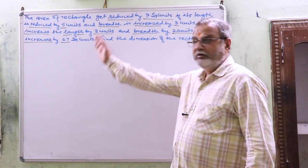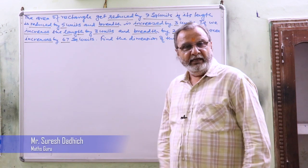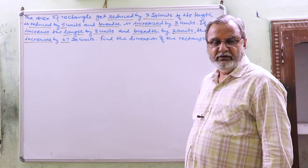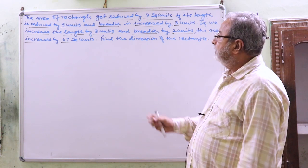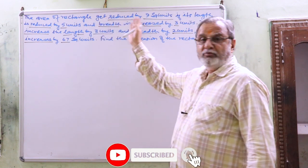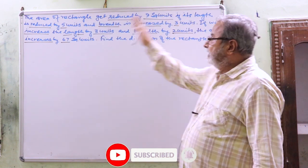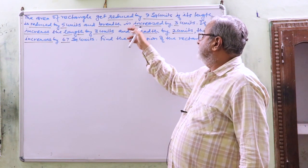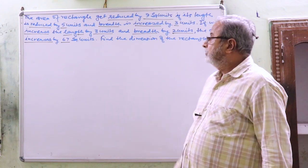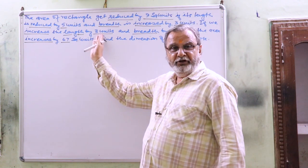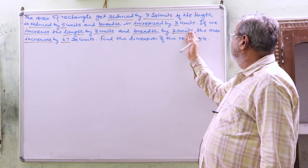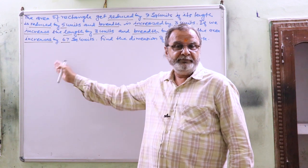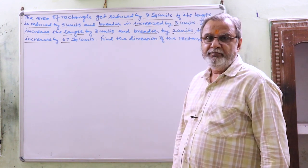Dear student, the question is taken from exercise 3.5, question number 2, part last, that is 6. The area of the rectangle gets reduced by 9 square units if its length is reduced by 5 and breadth is increased by 3 units. If we increase the length by 3 units and breadth by 2 units, the area increases by 67 square units. Find the dimensions of the rectangle.